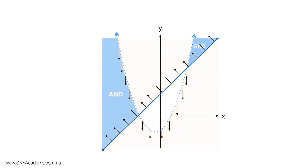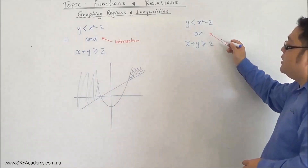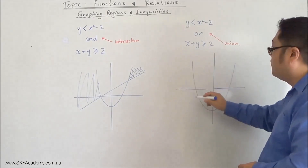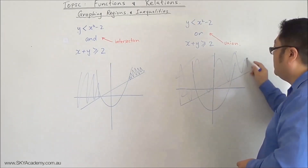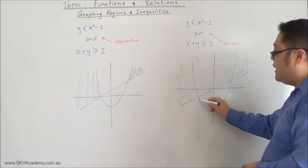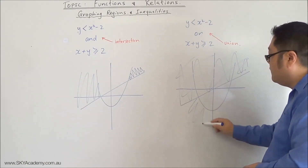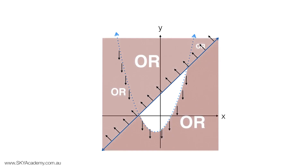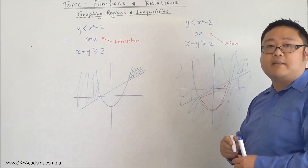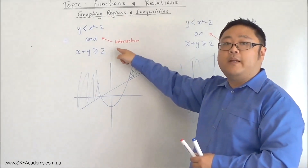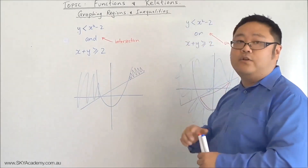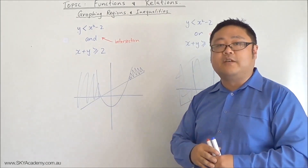When you use the word 'or', you're including all of that region there, all of that region there, and also all of this region here. The only bit that's not included is the area in between those two individual regions. That is the difference between intersection and union. Thank you very much for watching.